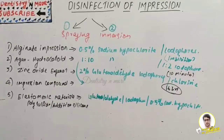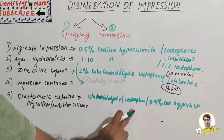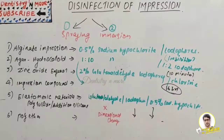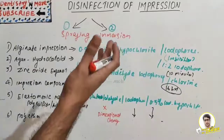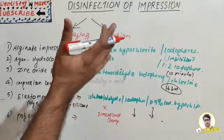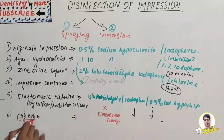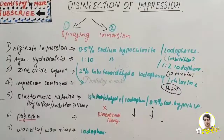For elastomeric materials such as polysulfide and addition silicone, we can use glutaraldehyde, iodophore, or 0.5% sodium hypochlorite. For polyether, we can just spray iodophore or 0.5% sodium hypochlorite. As with any other material, prolonged immersion causes distortion. We cannot use 2% glutaraldehyde for polyether because it causes dimensional change.